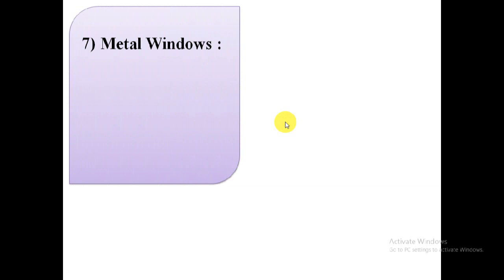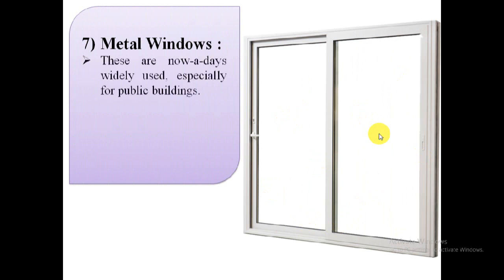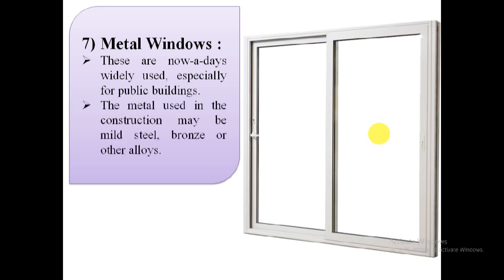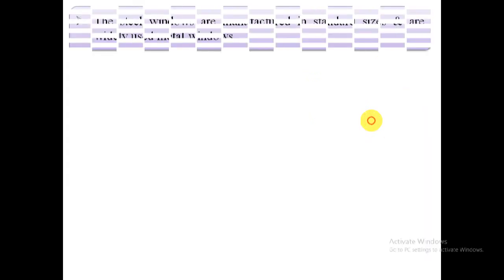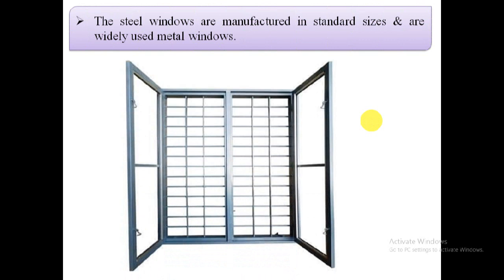The seventh type is metal windows. Metal windows are nowadays widely used, especially for public buildings. The metal used in construction may be mild steel, bronze, or other alloys. Steel windows are manufactured in standard sizes and are widely used.